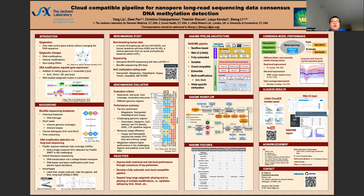Furthermore, long-read sequencing analysis for the human genome requires much more computing resources than next-generation sequencing. Thus, scalability and reproducibility are critical in pipeline design. Currently, no pipeline integrates and automates DNA methylation detection for nanopore sequencing using cloud computing.